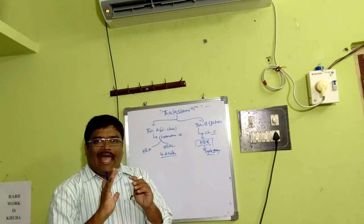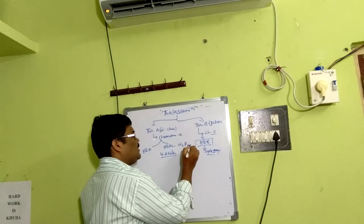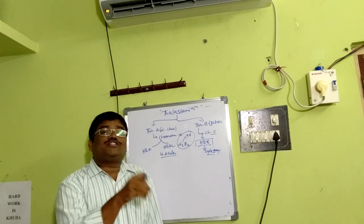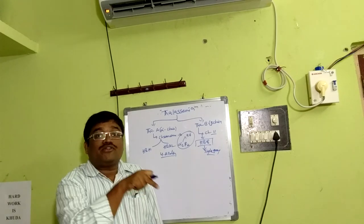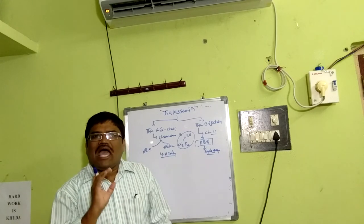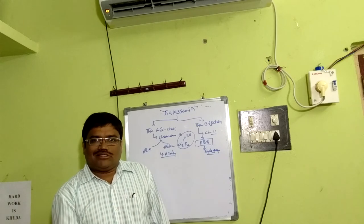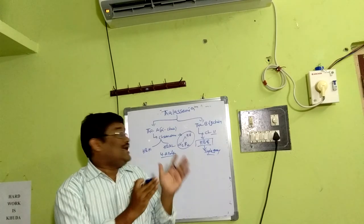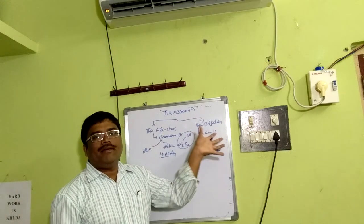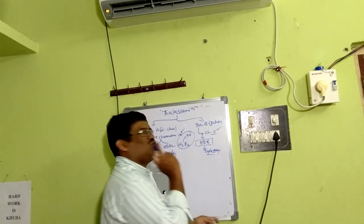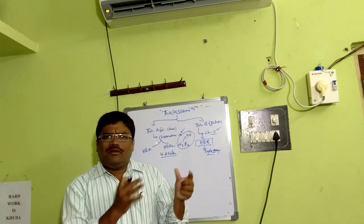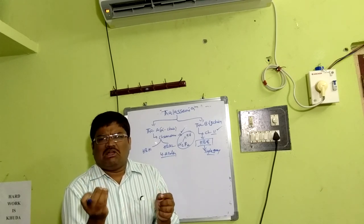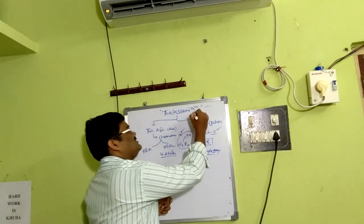Hemoglobin is a heterotetramer — two alpha chains and two beta chains. In sickle cell anemia, the beta chain has a mutation at the sixth position. In thalassemia, the entire structure is affected — abnormal production of the alpha or beta chain. If the alpha chain is affected, it is thalassemia alpha; if the beta chain, it is thalassemia beta. The common feature is massive destruction of red blood cells, leading to reduced production of healthy hemoglobin — hence anemia.